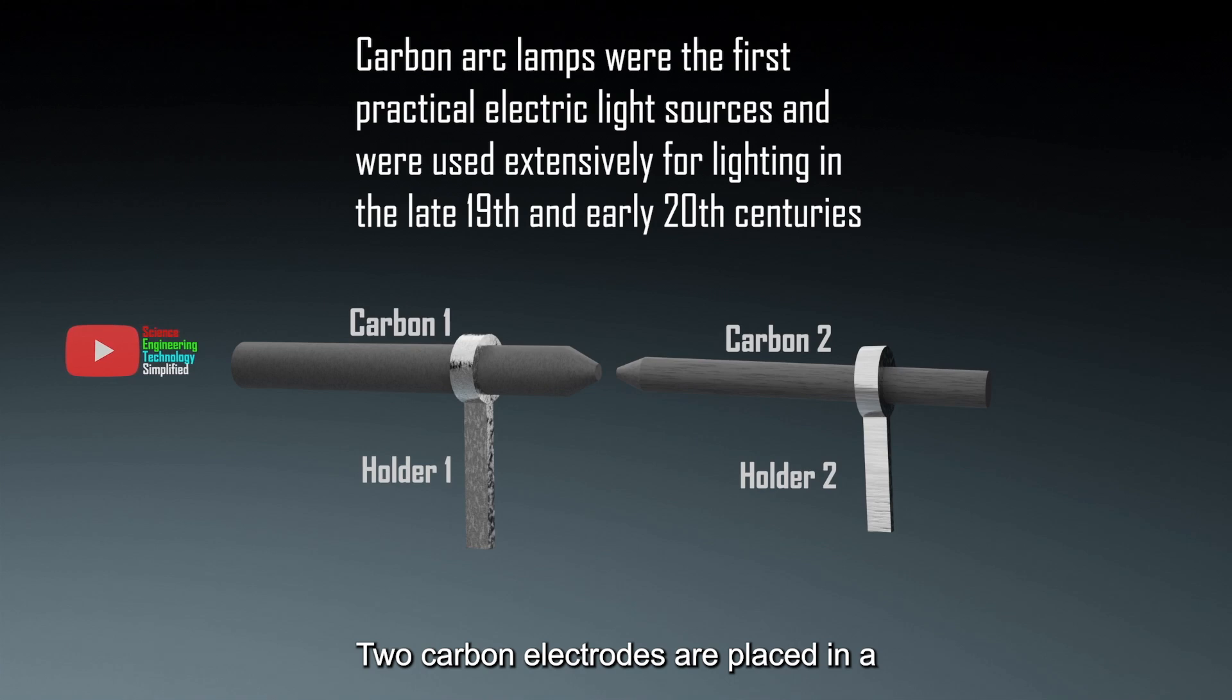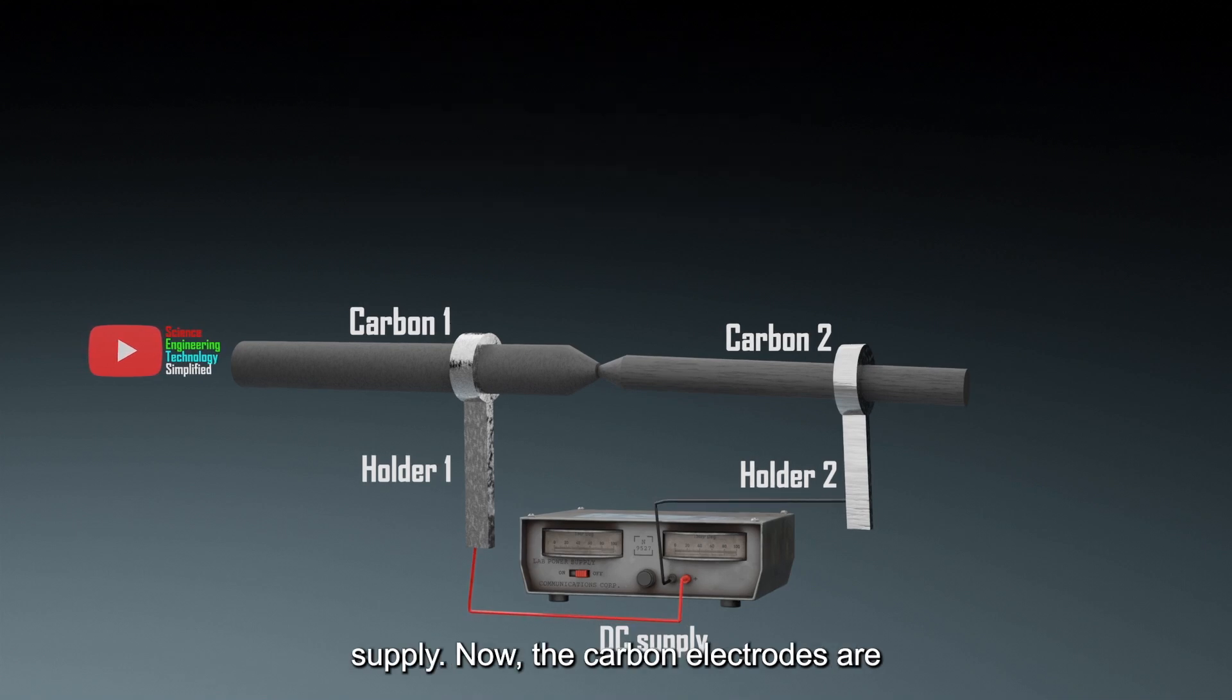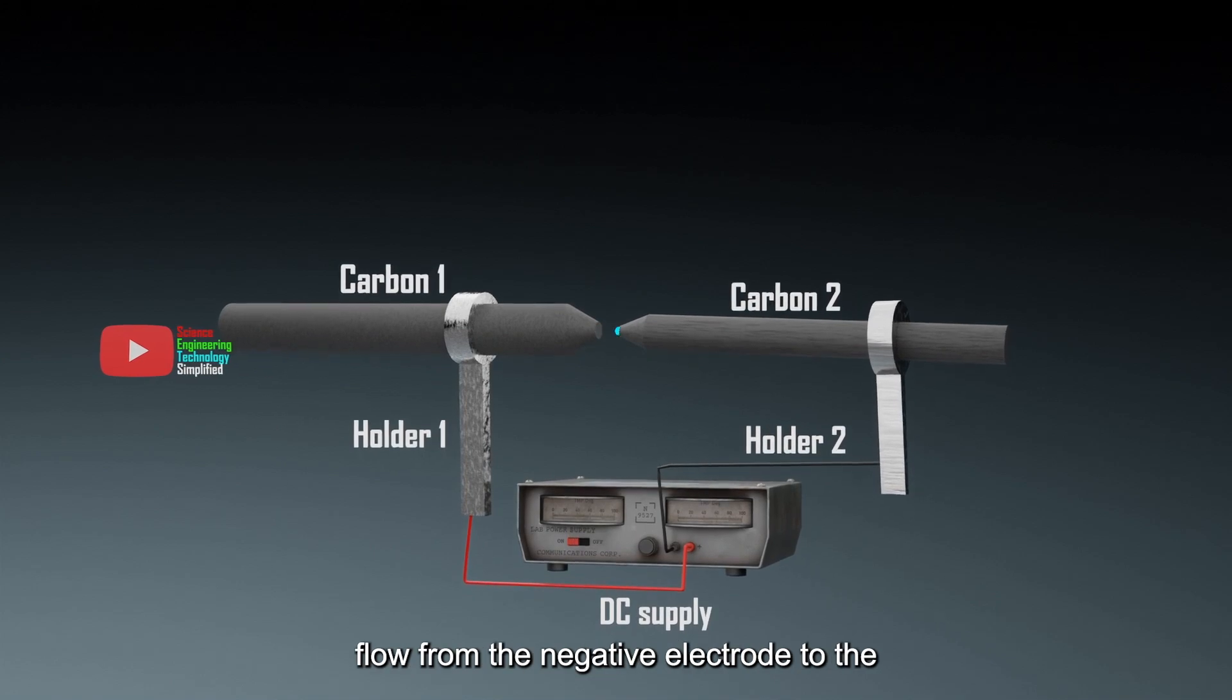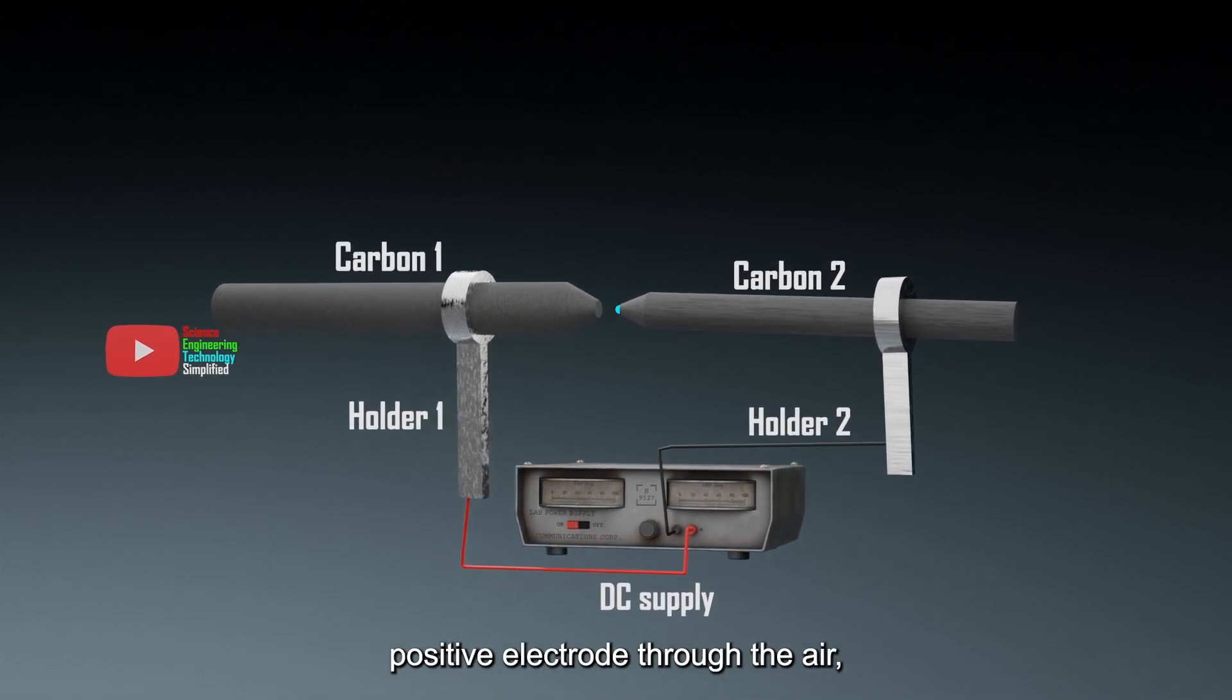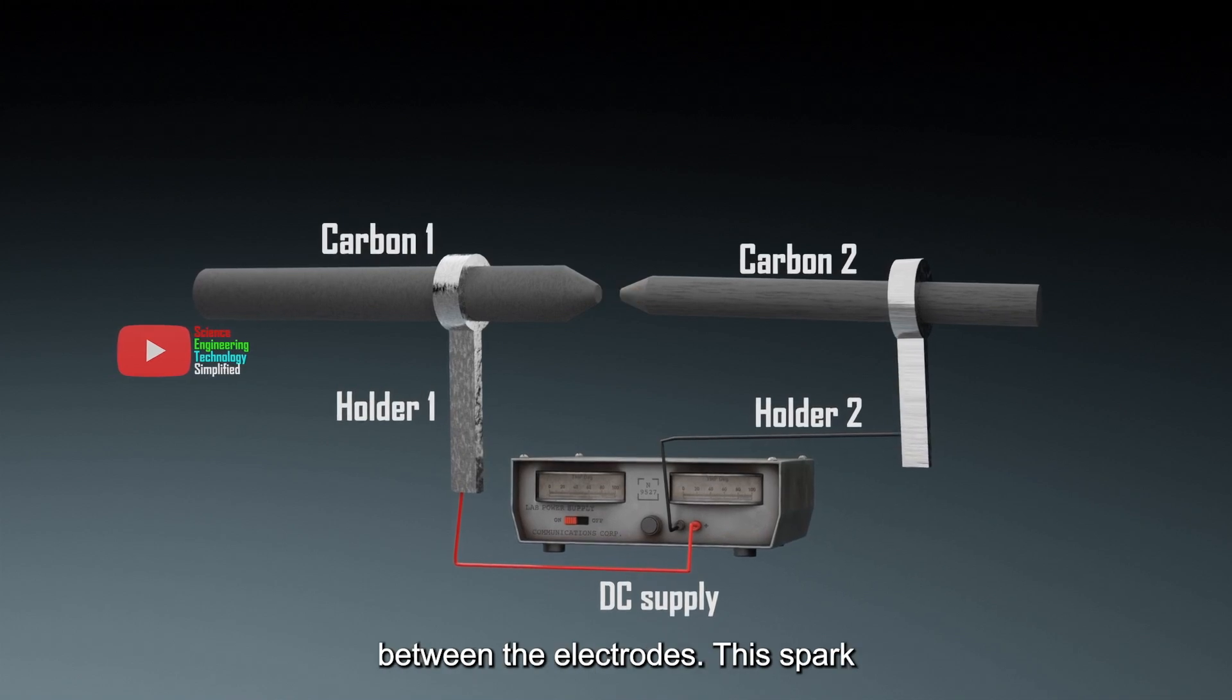Two carbon electrodes are placed in a holder. Initially, these carbon electrodes touch each other. The holder is then connected to a source of DC supply. Now, the carbon electrodes are slightly separated and the electrons flow from the negative electrode to the positive electrode through the air, creating a spark that bridges the gap between the electrodes.